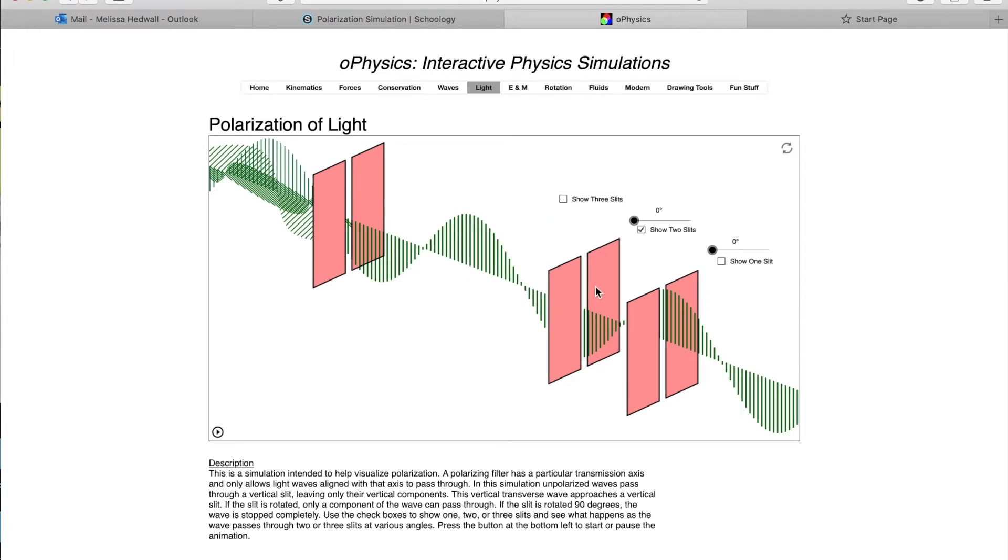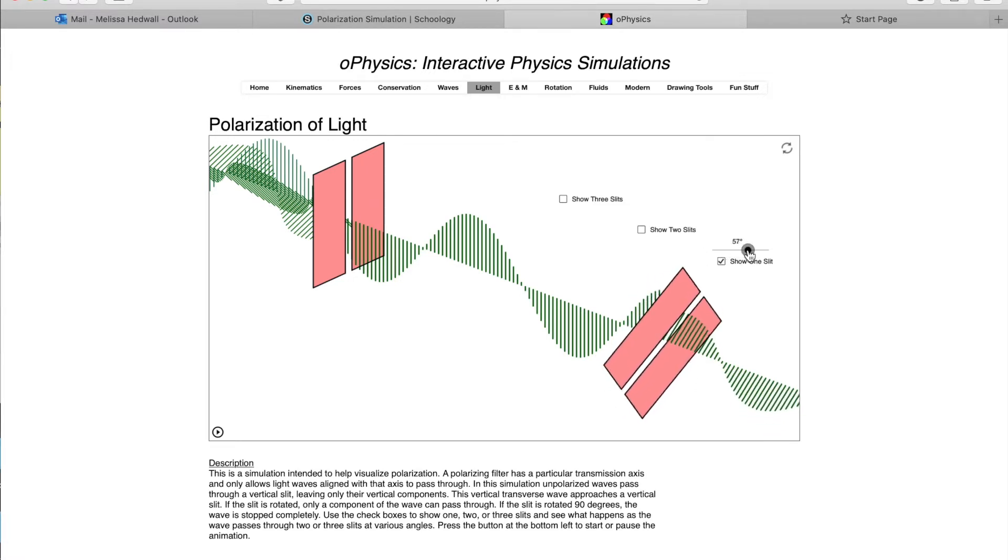So if you want two, you would check that one. If you just want one, you would check that one. And you have that first analyzer that's coming in.